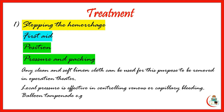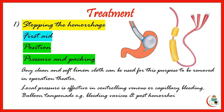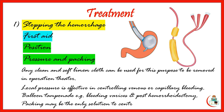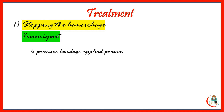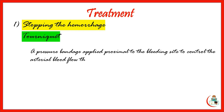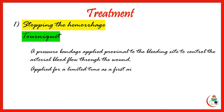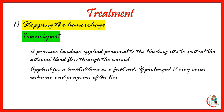Balloon tamponade is used to control bleeding varices by a Sengstaken tube. Another example is post-hemorrhoidectomy bleeding. Packing may be the only way to control secondary hemorrhage. A tourniquet is a pressure bandage applied proximal to the bleeding side to control arterial blood flow through the wound. It should be applied for a limited time as first aid, as longer application may lead to ischemia and gangrene, so it is better to limit its use.